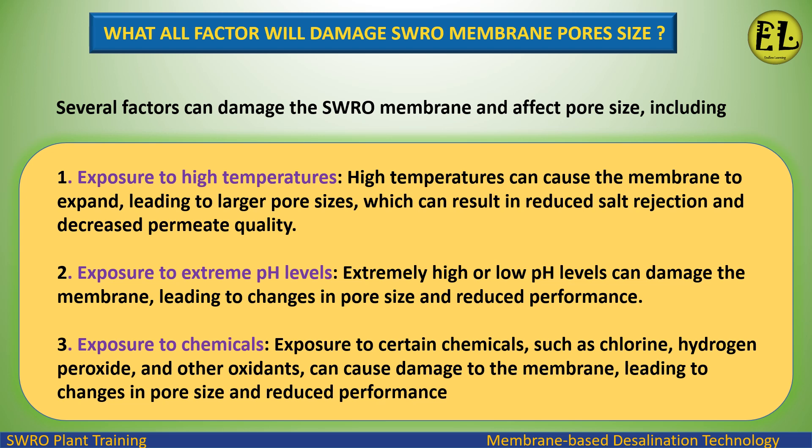Second, exposure to extreme pH levels: extremely high or low pH levels can damage the membrane, leading to changes in pore size and reduced performance. Third, exposure to chemicals: exposure to certain chemicals such as chlorine, hydrogen peroxide, and other oxidants can cause damage to the membrane, leading to changes in pore size and reduced performance.